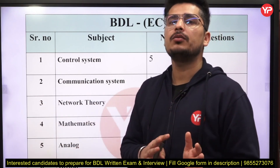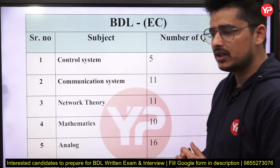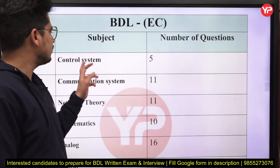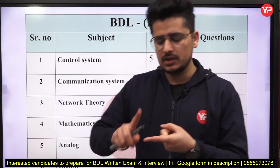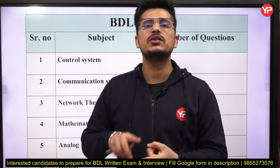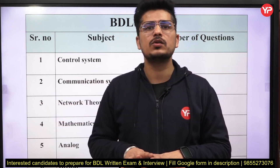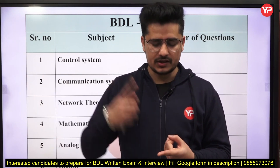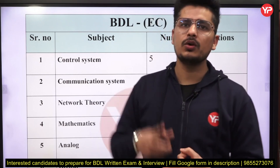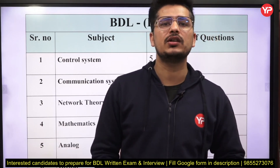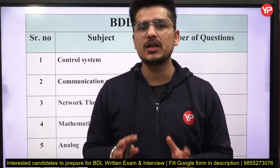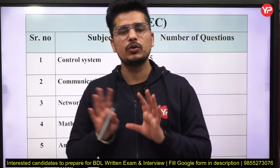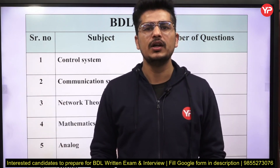Looking at the paper analysis from past papers, five questions are coming from control systems. One important thing about this BEL or BDL exam is that the level of questions is basic. You don't need to study how to draw the root locus in depth. The question might ask where root locus starts — options like pole or zero — or basic properties of the transfer function. Only definitions are asked.